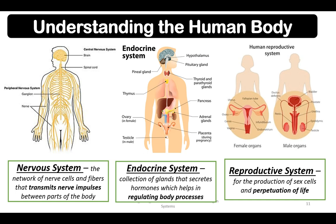And lastly, the reproductive system — we have male and female reproductive systems, which are different from each other. This system is responsible for the production of sex cells and the perpetuation of life, which is why there are many people in the world and many types of organisms.